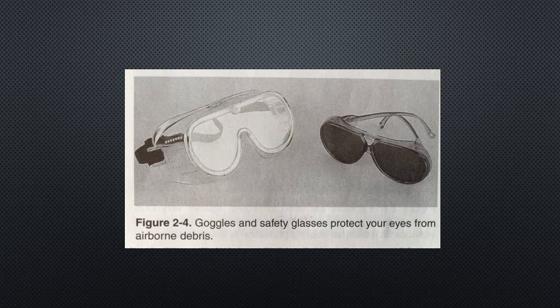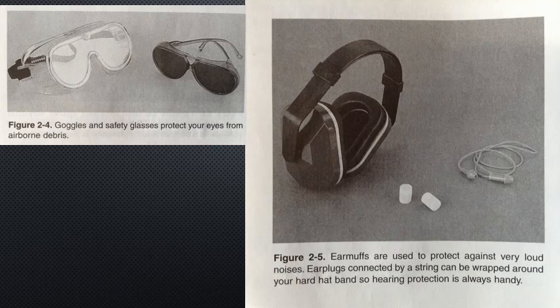Normally electricians de-energize equipment before performing work; however, there are rare times when the equipment must be live while you work on it. When this occurs, obey the following additional safety procedures: first, be sure to use insulated tools; second, wear rubber gloves and eye and face protection; third, place a rubber blanket or other suitable insulated shield over exposed live parts adjacent to the work area. Warning: Only work on energized equipment when it is absolutely necessary.